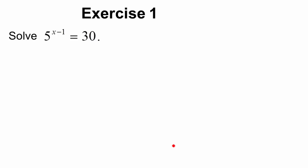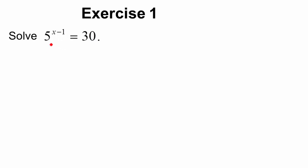Here is an example: solve for x where the unknown is in the exponent, and there is no way to write 30 as a power of base 5. That's why we can't use the same-base approach from previous sections — if you can't express it with the same base, you can't set the exponents equal to each other. But we've already isolated the exponential expression on one side, so step two says to take the natural log of both sides.